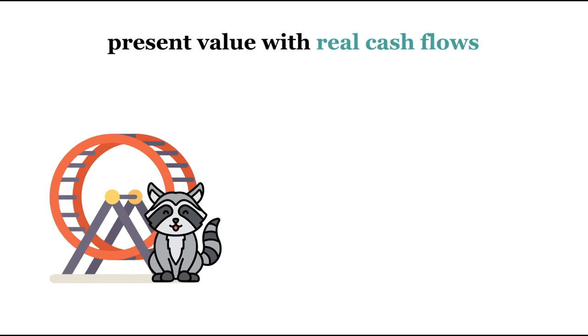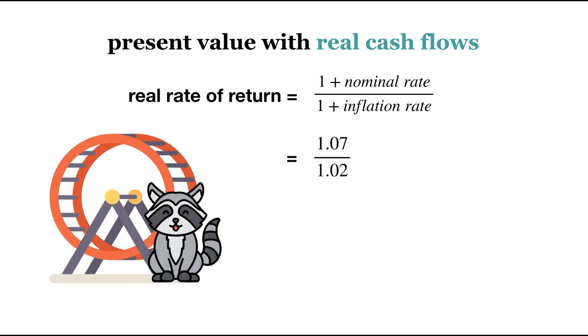Now, let's compare by solving for the present value using real cash flows. First, we'll calculate the real rate of return. We can earn 7% each year, but inflation is 2% each year. Thus, our real return is 1.07 divided by 1.02, minus 1, equals 4.9%.